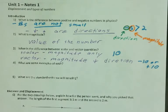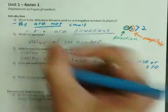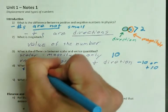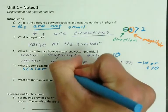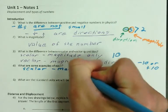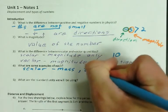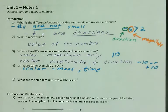So let's do some examples of each. So an example of a scalar, two examples of that would be mass and time. Right? You can't have forward mass. You can't have backwards mass. So mass is an example.